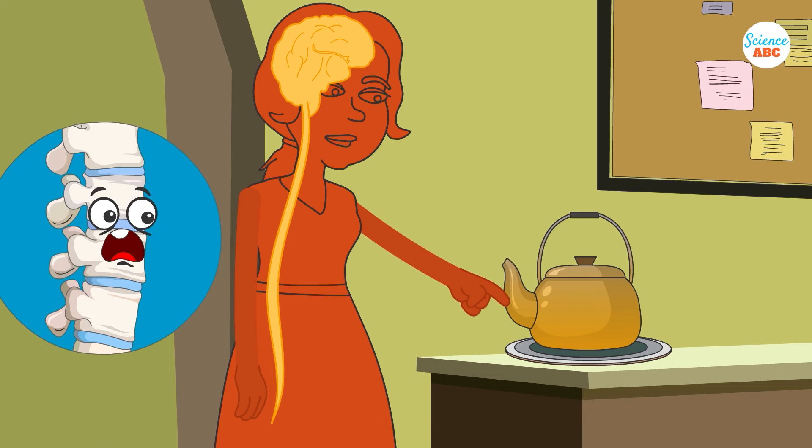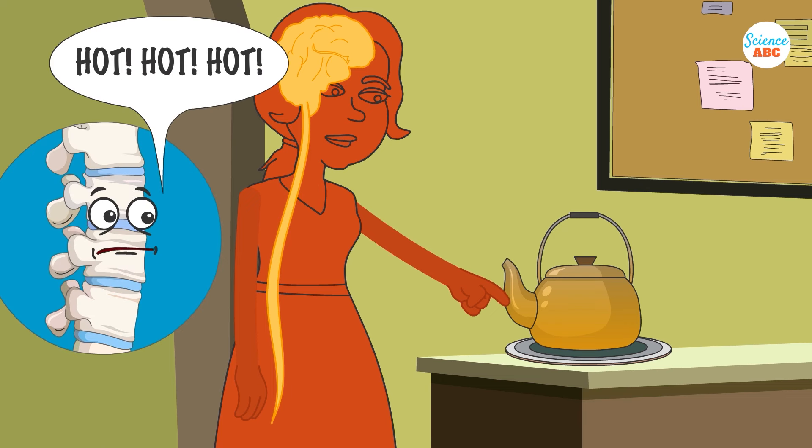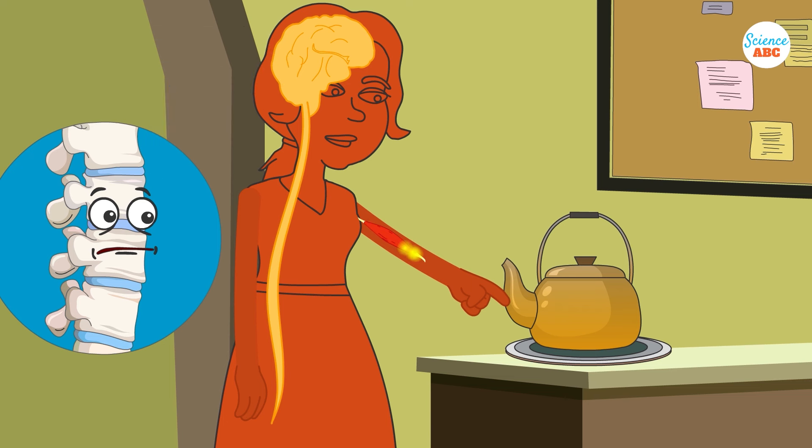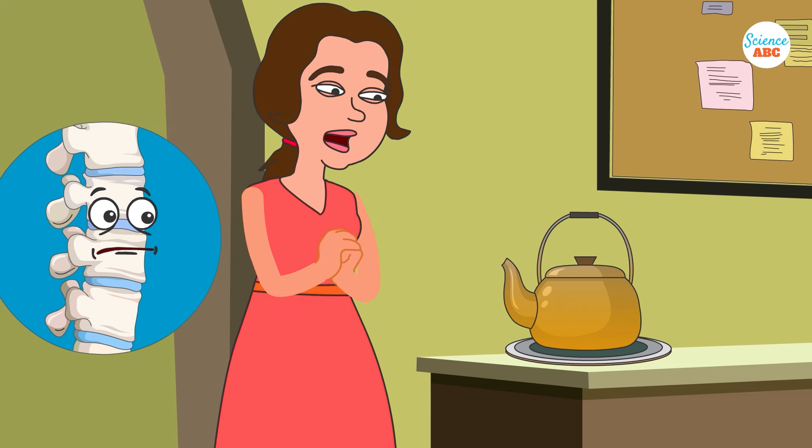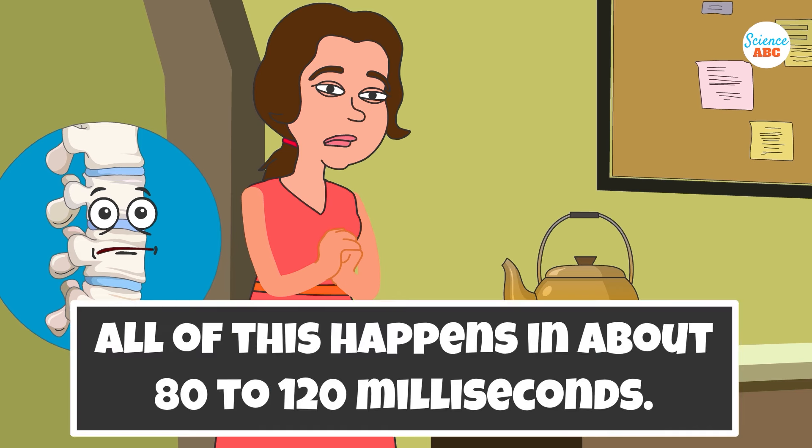The spinal cord will read the hot, hot, hot message and pass this signal to the motor neurons in your hand. The motor neurons will contract and relax your muscles so that you pull your hand away. Shockingly, all of this happens at about 80 to 120 milliseconds, faster than the blink of an eye.